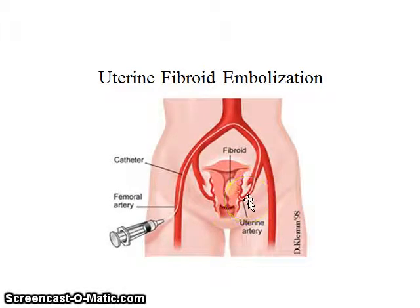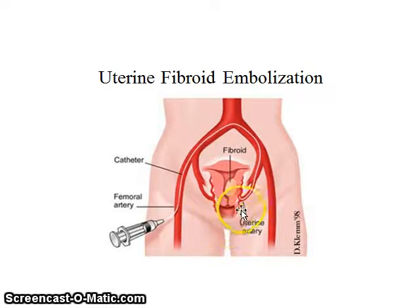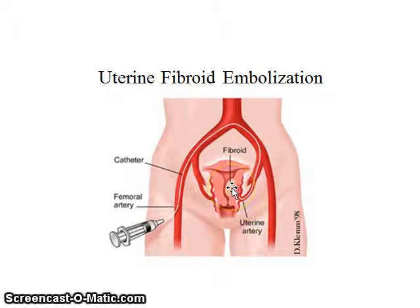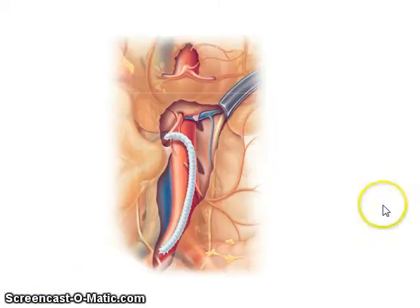What this procedure does is place an embolic material — whether it be coils, glue, or other embolic material — into the uterine artery. This blocks blood flow to the fibroids, and then the fibroids eventually shrink and go away because the blood flow to them has been blocked.